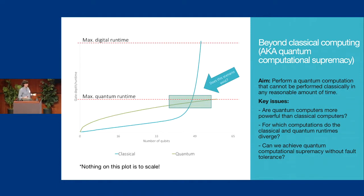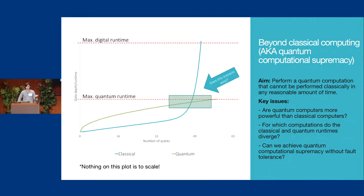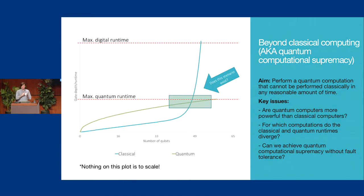In order to develop applications that can outperform classical computers in the near future, we have to work hard as theorists. We need to identify problems where the complexity of the best classical algorithms radically diverges from the complexity of the quantum algorithms we have for that application. The first big issue is whether quantum computers are more powerful than classical computers at all — any proof of such a radical divergence would separate P from PSPACE, which would be the biggest result in complexity theory ever.